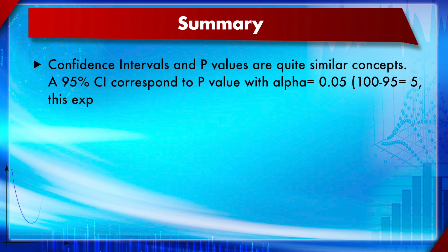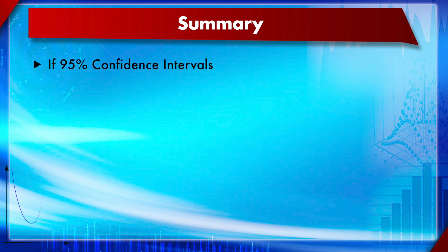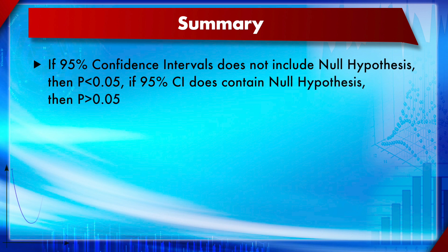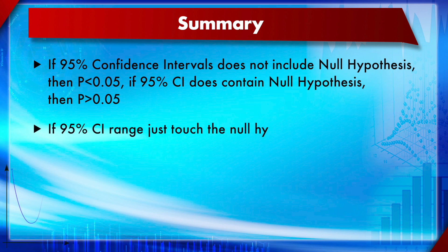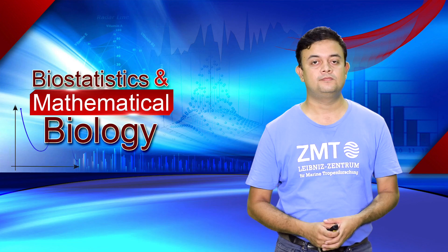In summary: confidence intervals and p-values are closely related concepts. A 95% CI corresponds to alpha equal to 0.05, because 100 minus 5 equals 95, and 5% expressed as probability is 0.05. To check whether two group means differ significantly, plot mean plus or minus 95% CI and see whether the ranges overlap. If the 95% CI does not include the null hypothesis, the p-value is less than 0.05. If it does contain the null hypothesis, the p-value is greater than 0.05. If the CI just touches the null hypothesis, the p-value equals 0.05 and the result is not statistically significant.